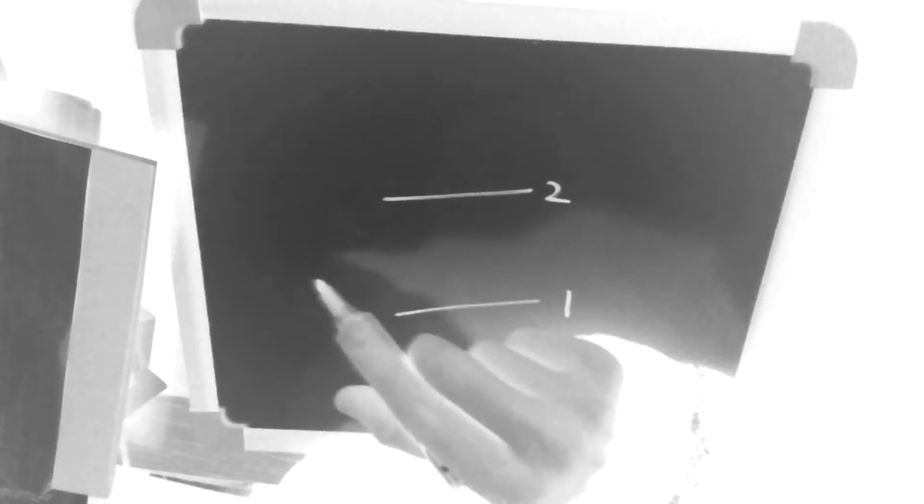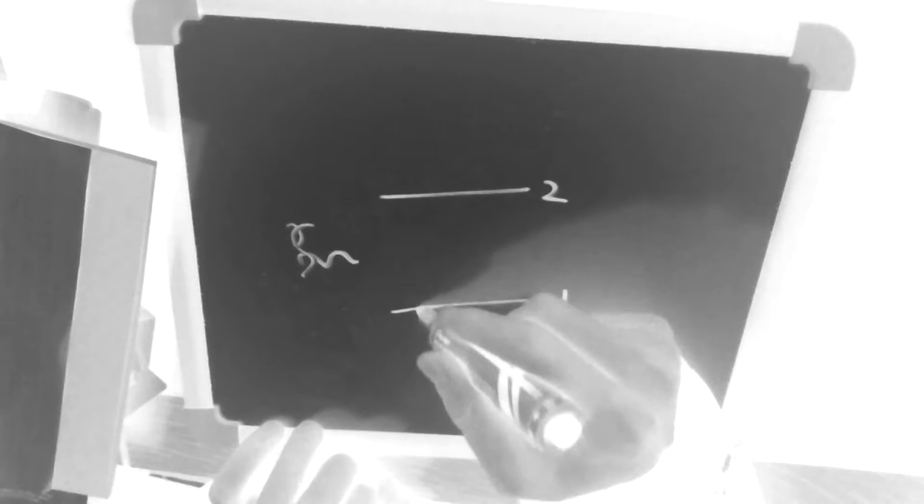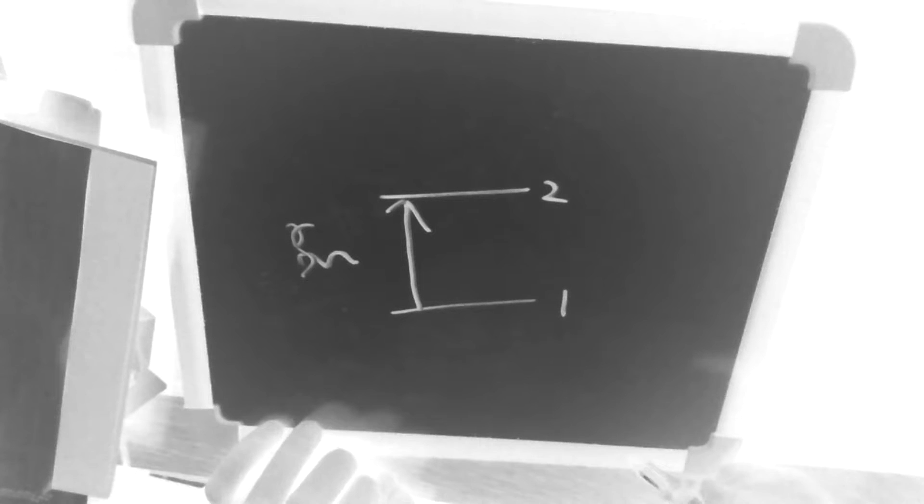There's something called absorption and you've probably heard about this. It's when an atom in level 1 absorbs a photon, so a photon comes in, it's absorbed, and the atom jumps from level 1 to level 2. So this is absorption.